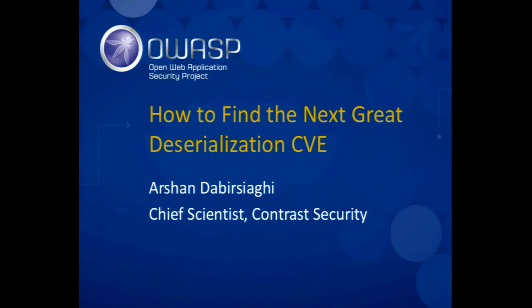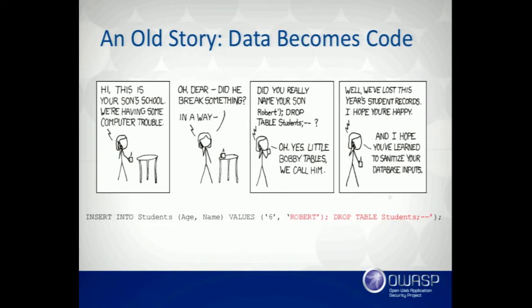All the exploits today have been disclosed but only some of them have been fixed. Everybody knows little Bobby Tables, but deserialization is really just another 'data becoming code' problem. The issue is that deserialization exploits are just not very visible.